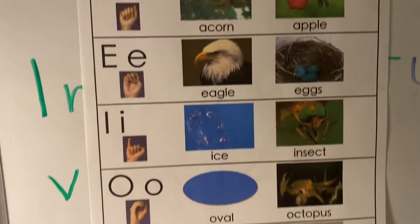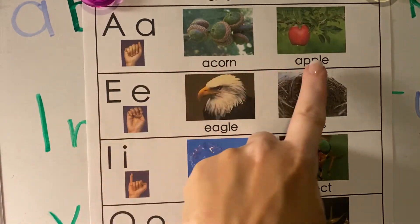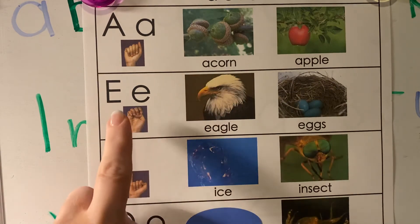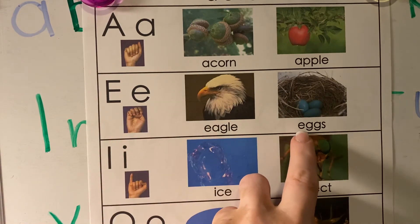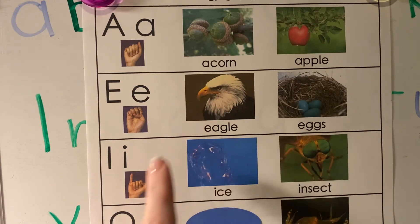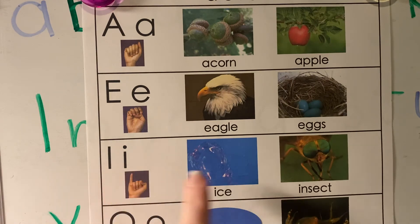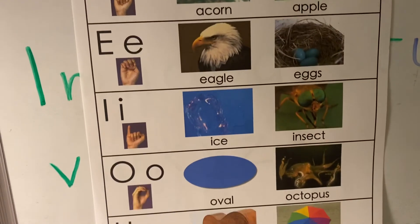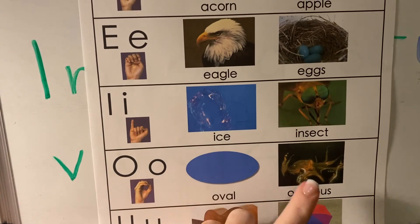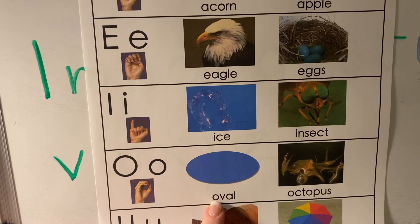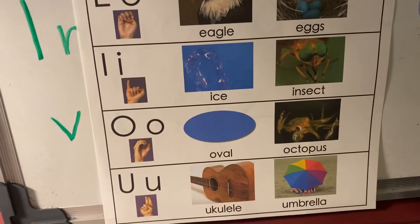Let's review one more time. A — short sound is A, long sound is A. E — short sound is E, long sound is E. I — short sound is I, long sound is I. O — short sound is O, long sound is O. And U.